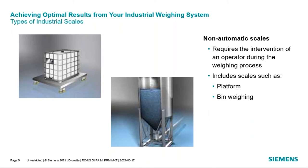A platform scale is basically a platform mounted on one or more load cells. You put an object on it and it tells you how much it weighs. A bin weighing system takes a small hopper or silo, puts it on load cells, calibrates out the weight of the hopper or silo, and you can know how much product is in the container based on the output of the load cells.